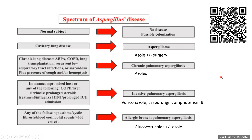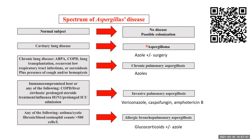Aspergillus can cause many varieties of disease. In normal subjects with healthy immune systems, there's typically no disease — there may be colonization, but no symptoms. For patients with cavitary lung diseases or things like bronchiectasis and other structural lung diseases, they tend to get an aspergilloma. Patients with other chronic lung diseases like COPD, transplant, other respiratory tract infections, and sarcoidosis often get chronic pulmonary aspergillosis, or CPA. Both aspergilloma and CPA are on a spectrum; aspergilloma is just a more organized version of CPA.